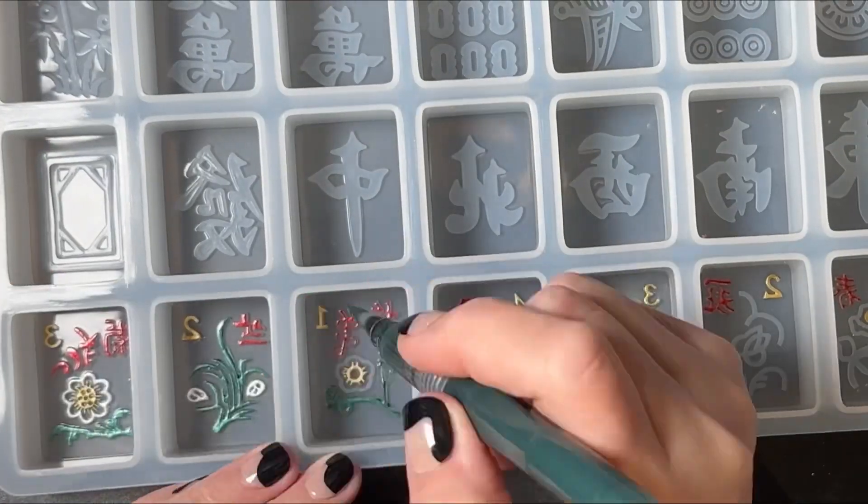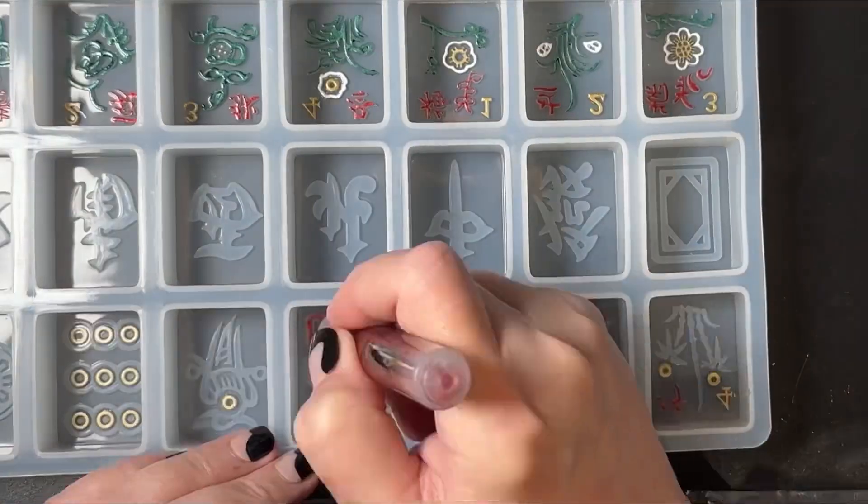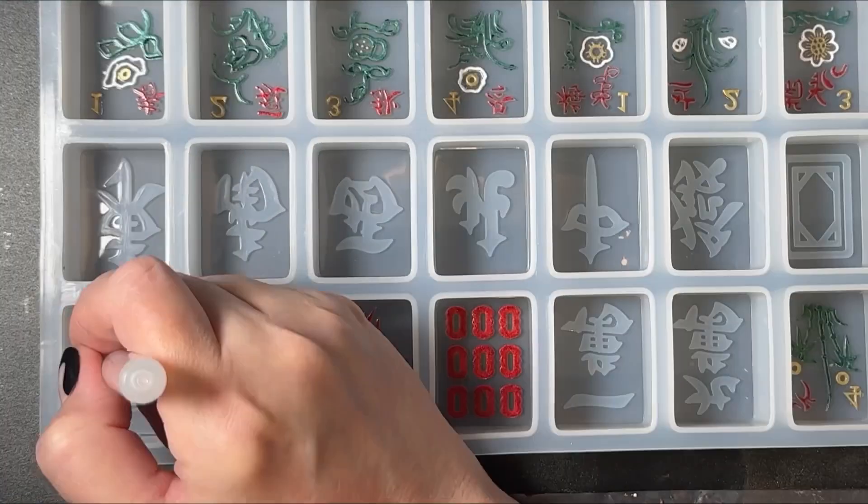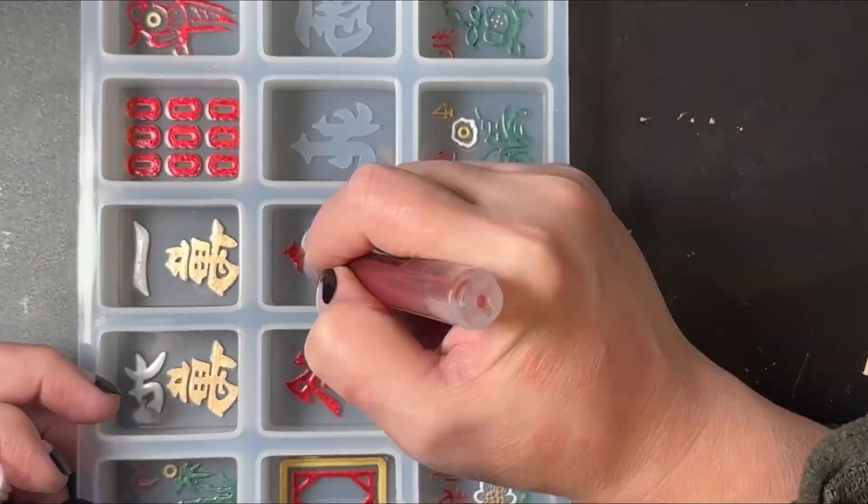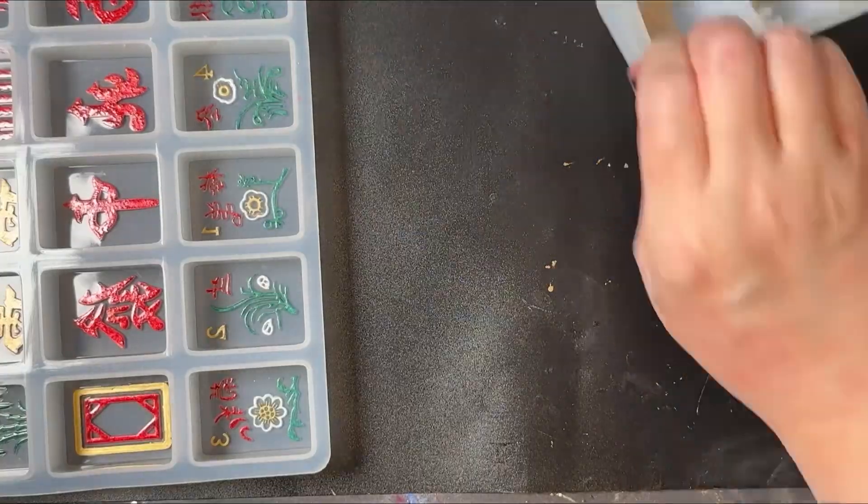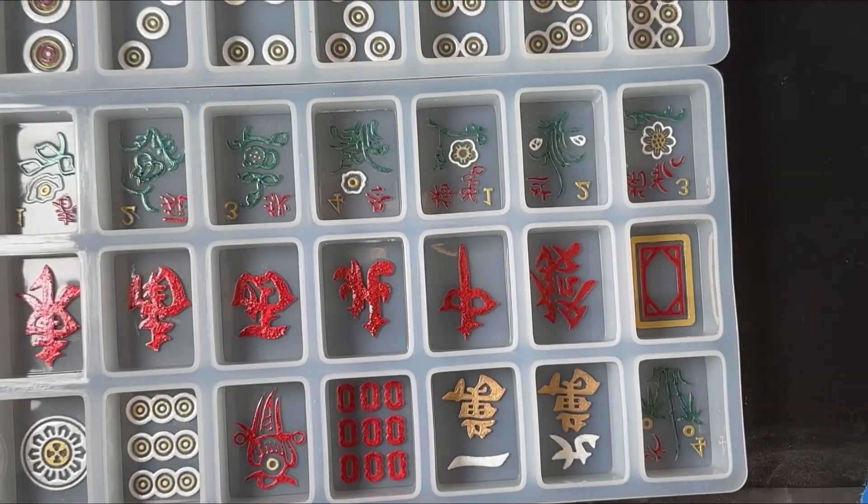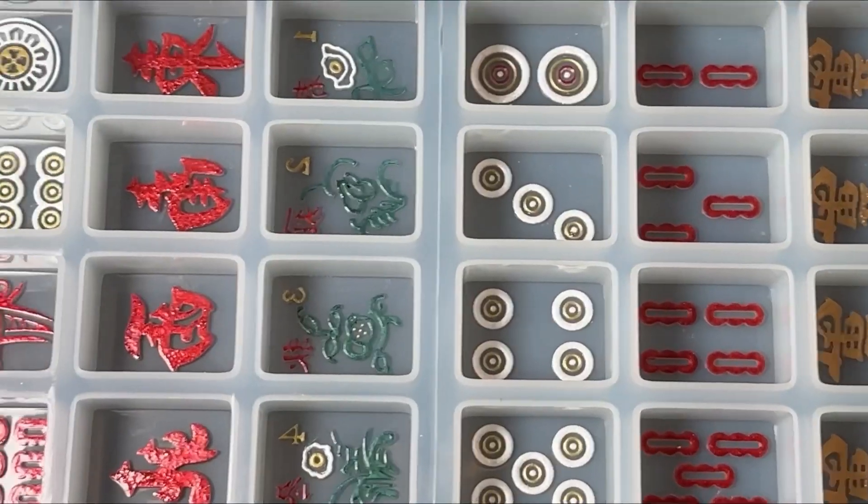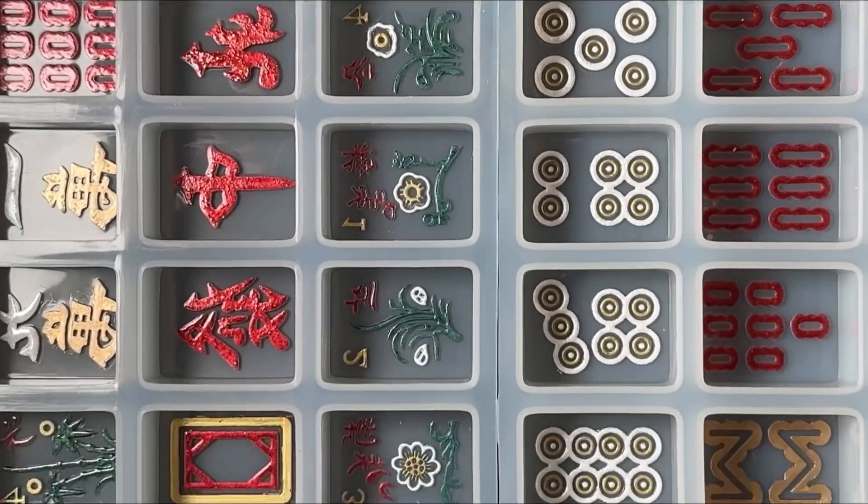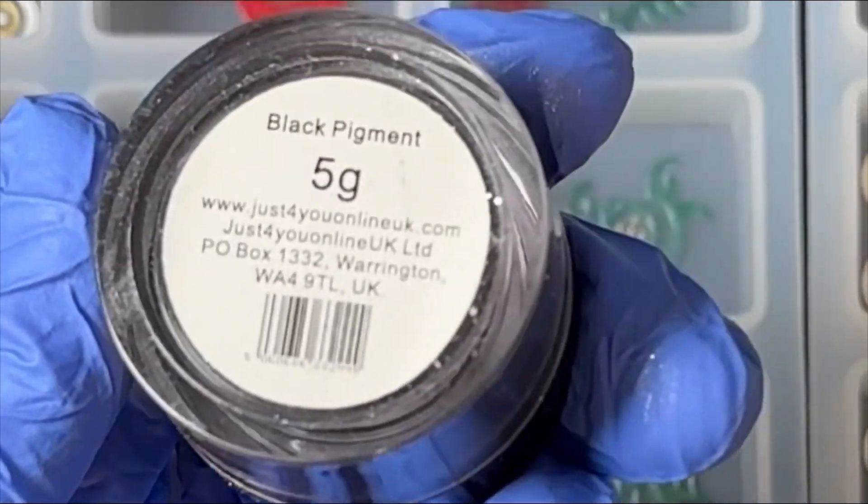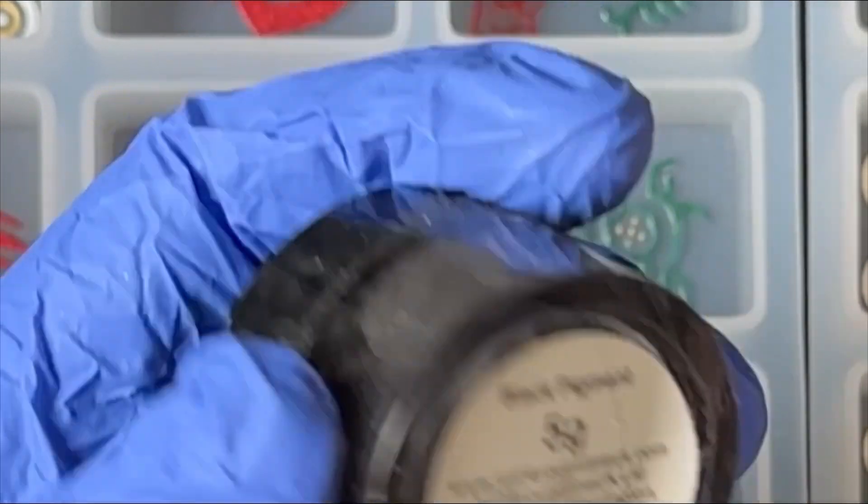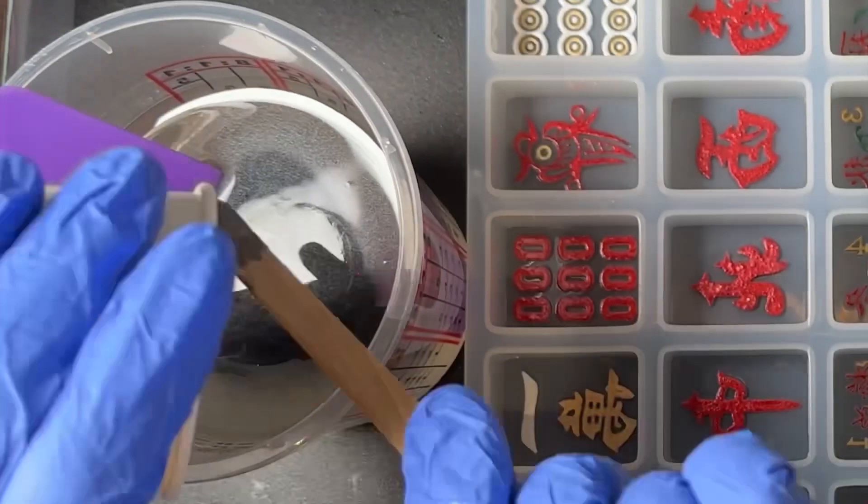Once all of the tiles had been painted, at that point I mixed up 14 ounces of resin and I wound up having to actually mix up about another 8, so for half fill of the tiles it takes about 22 ounces of resin. I added some black mica pigment, but I also added some marbler's black ink just to give it a deeper black.